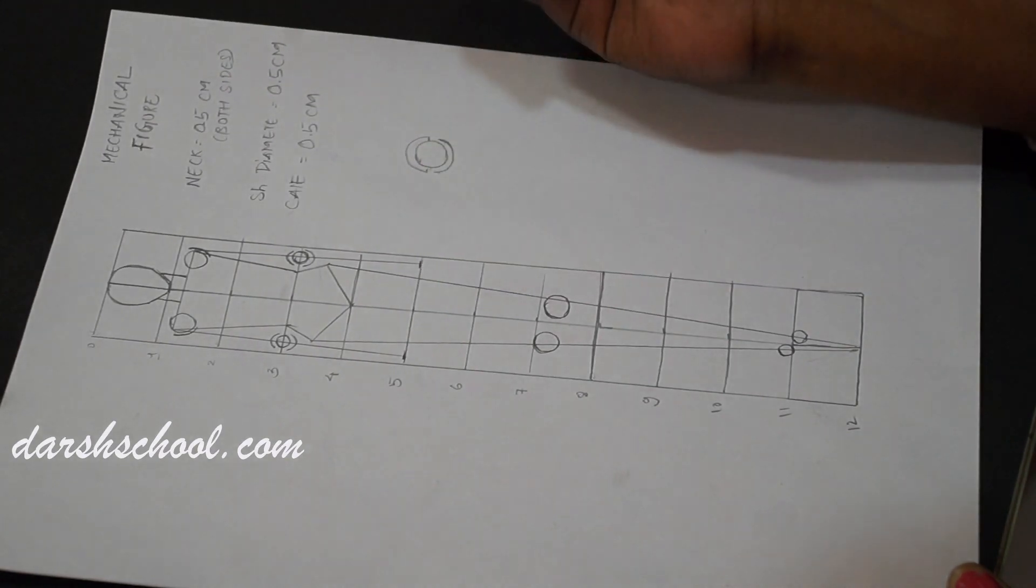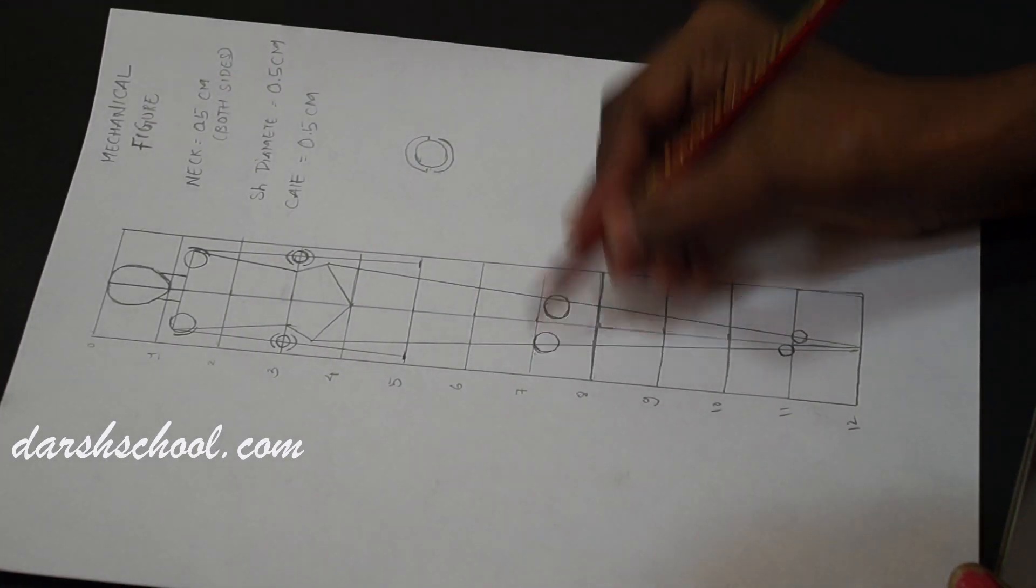And then this is your wrist point. Give it a hyphen mark. And next is your knee.